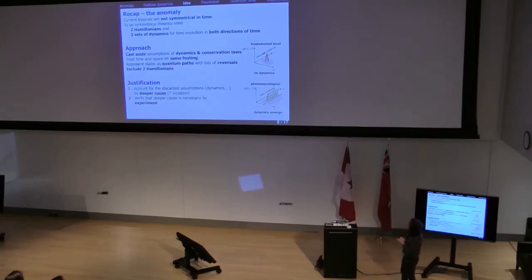We've got two Hamiltonians. So if we have a theory, it should incorporate two Hamiltonians and it should have two sets of dynamics. And the approach I'm going to take is to cast aside these dynamics and conservation laws, as I've just said.